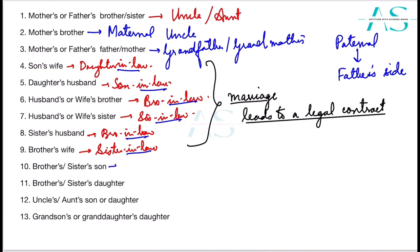Your brother's or sister's son is your nephew. Your brother's or sister's daughter is your niece — niece is female, nephew is male. Your uncle's or aunt's son or daughter, whoever it may be, we simply use the word cousin. Don't say cousin brother or cousin sister — that is a wrong usage. Simply call them your cousin.